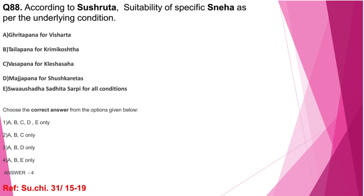Question number 88: According to Sushruta, suitability of specific sneha as per the underlying condition. A: Ghritapana for Vishartha — correct. B: Tailapana for Krimi Koshta — correct. C: Vasapana for Kleshasaha — wrong; for Kleshasaha, Majjapana is indicated. D: Majjapana for Shushkaretas — wrong; for Shushkaretas, it is Vasapana. E: Svaushadha Sadhita Sarpi for all conditions — correct. So A, B and E are correct; the correct answer is option 4. In this AIAPGET 2024 question paper, questions related to indication of Chatushsneha appear from both Sushruta and Charakasamhita.